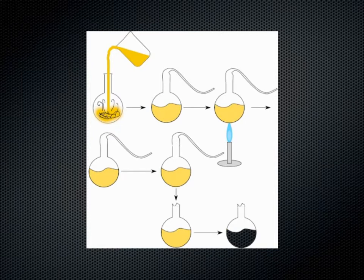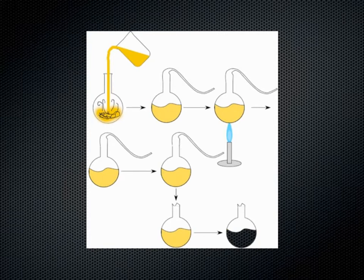Nothing was able to get in through that curved neck. Air was able to get in and out, but air is pretty sterile. Bacteria and other organisms were not able to get in. Eventually he broke the top off, and after some time it started to get cloudy and dark colored — mold was growing inside. Bacteria and mold spores were able to fall into the flask and contaminate the solution. So he was able to actually prove that spontaneous generation did not happen.